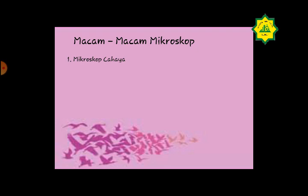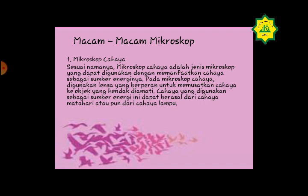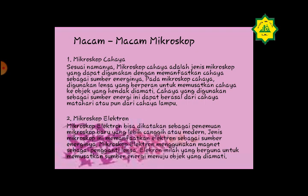Macam-macam mikroskop ada dua, yaitu mikroskop cahaya dan mikroskop elektron. Mikroskop cahaya adalah jenis mikroskop yang menggunakan cahaya sebagai sumber energinya, memanfaatkan lensa untuk memusatkan cahaya ke objek; cahayanya bisa berasal dari matahari ataupun lampu. Sedangkan mikroskop elektron adalah penemuan yang lebih canggih atau modern, yang memanfaatkan elektron sebagai sumber energi dan menggunakan magnet sebagai pengganti lensa untuk memusatkan sumber energi menuju objek yang diamati.